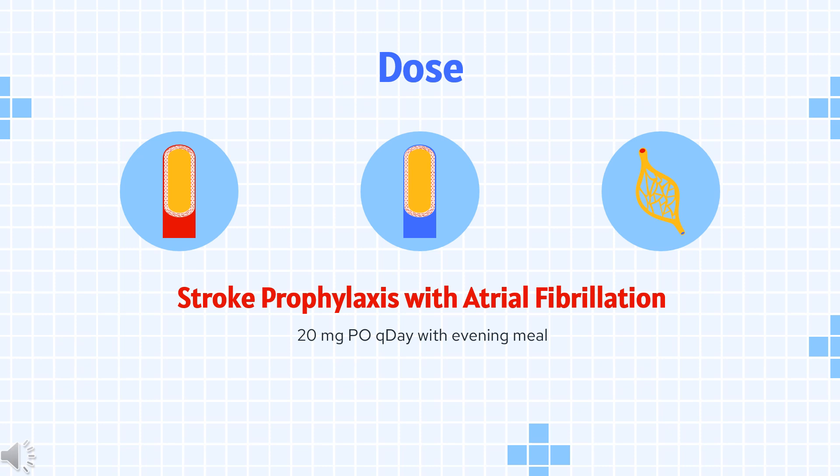DVT and/or PE treatment: Indicated for treatment of existing DVT or PE. For CRCL ≥15 mL/min: 15 mg orally every 12 hours for 21 days, then 20 mg orally once daily. For CRCL <15 mL/min: avoid use.